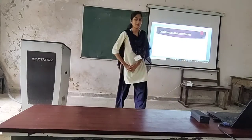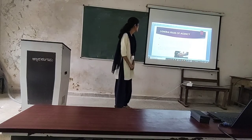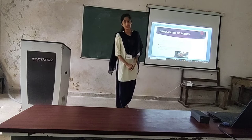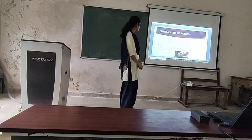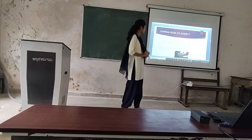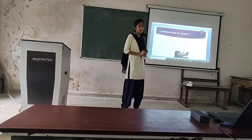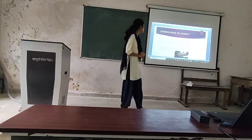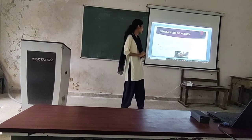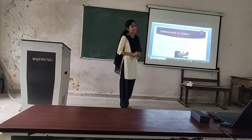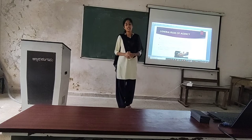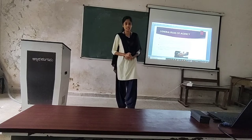Good afternoon everyone. Myself Kada Ambalika. Today I am going to explain the general rules of agency. The law of agency is based on two general rules. Rule one: the principal is bound by the acts of the agent and can get the benefit of such acts, as if he had done them himself. This rule says that the principal is responsible for the acts of the agent — if an agent makes any mistake, the principal is held responsible.